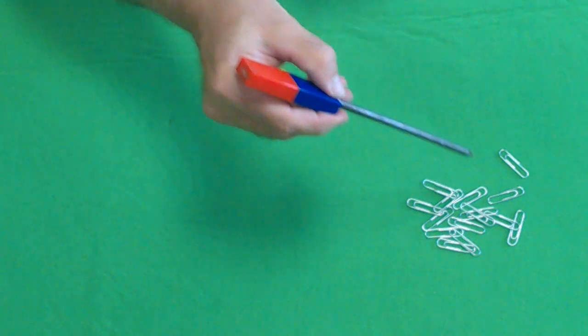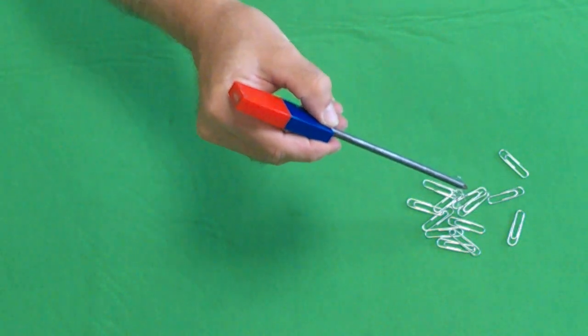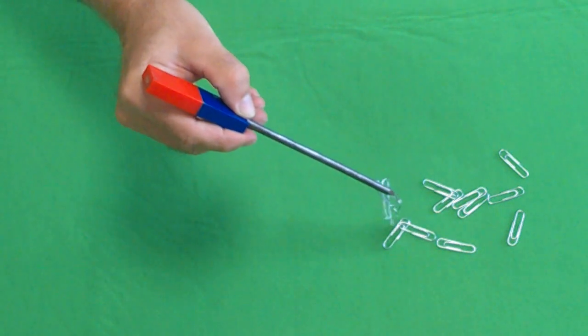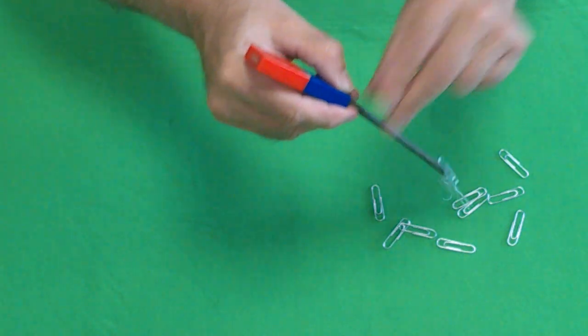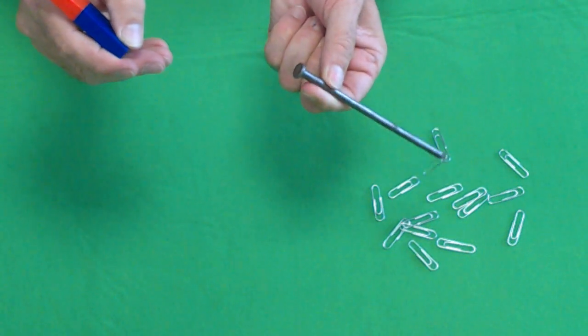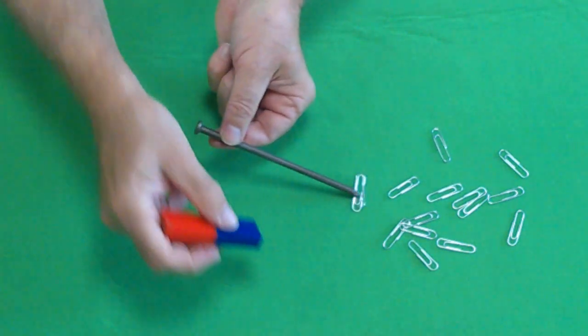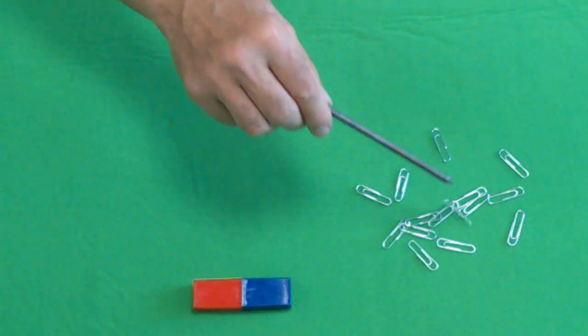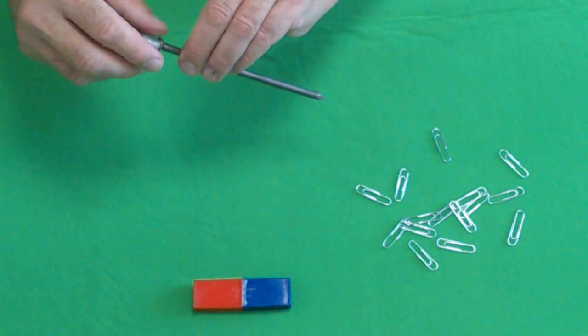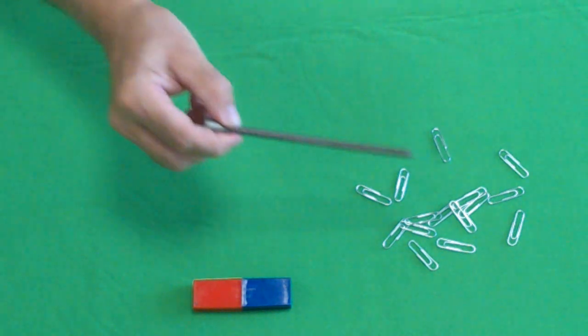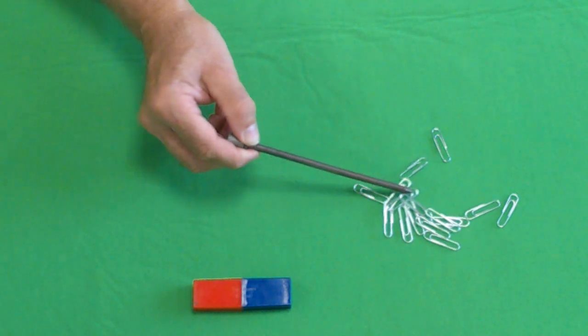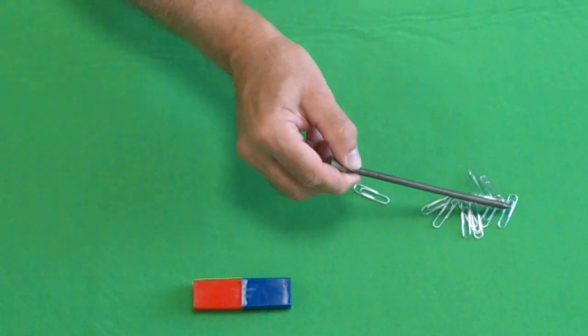Attaching the magnet to the nail means that the field lines can be concentrated through the magnetic nail, turning the nail into a temporary magnet. Remove the magnet and the nail itself is no longer magnetic. This is called induced magnetism. Using a stronger nickel or cobalt magnet perhaps makes this even clearer. Many more paper clips are picked up.